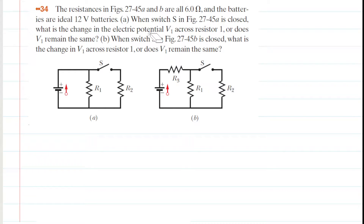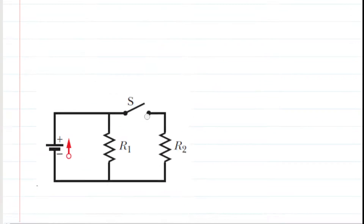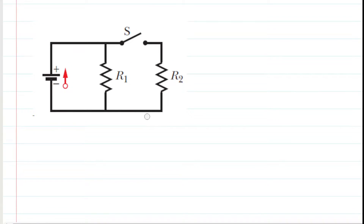In part A, the question notes that when switch S is closed, what is the change in the electric potential V sub 1 across resistor 1, or does V sub 1 remain the same? Let's take a closer look at the scenario and zoom in on the circuit. Right now the switch is open, so this rightmost section of the circuit is irrelevant — we can just remove it.